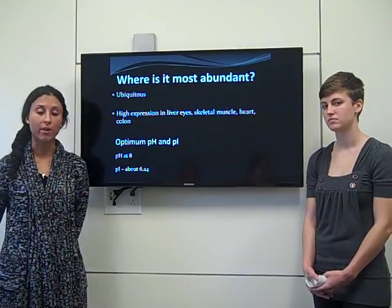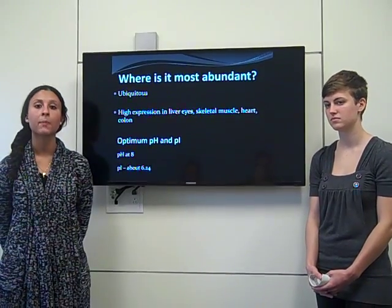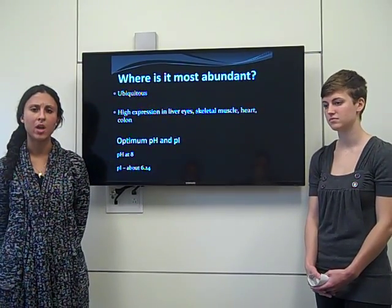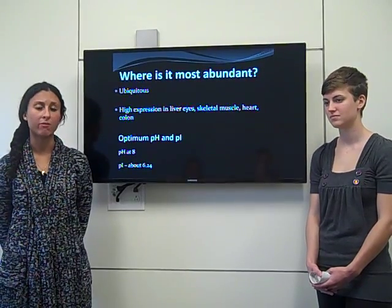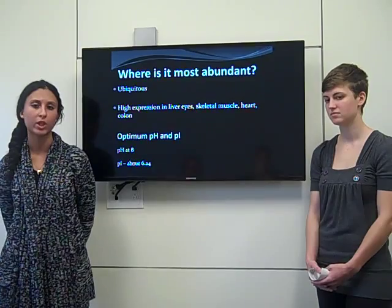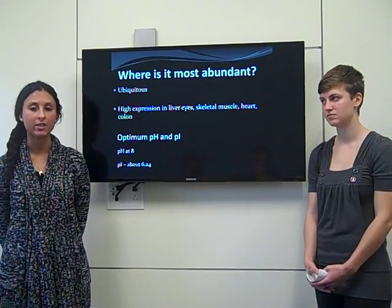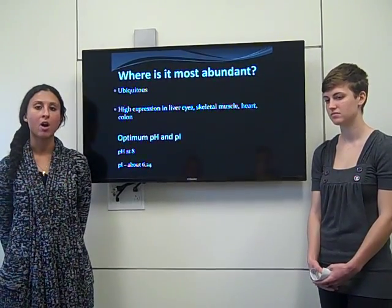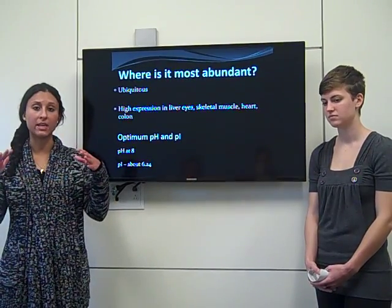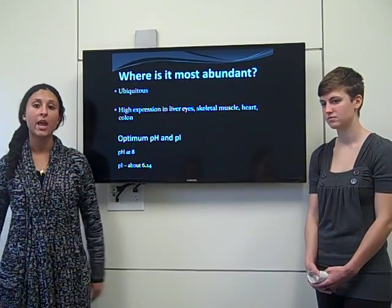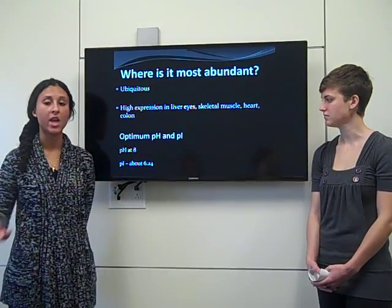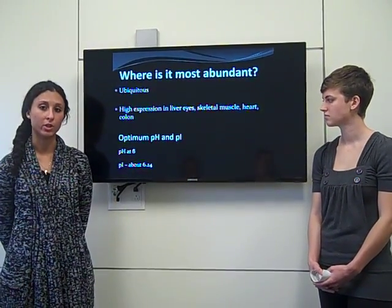And a lot of other areas throughout our body. The pH that this enzyme functions best in is a pH of around 8, which is fairly basic, and the isoelectric point — the point where the enzyme essentially has no charge — is around a pH of 6.24, where GSTO-1 stops functioning.